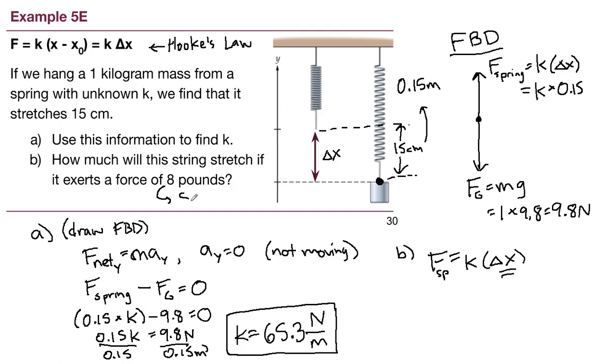We are going to have to change that pounds into newtons so there are 4.45 newtons per one pound. This amount of pounds is going to be 35.6 newtons.